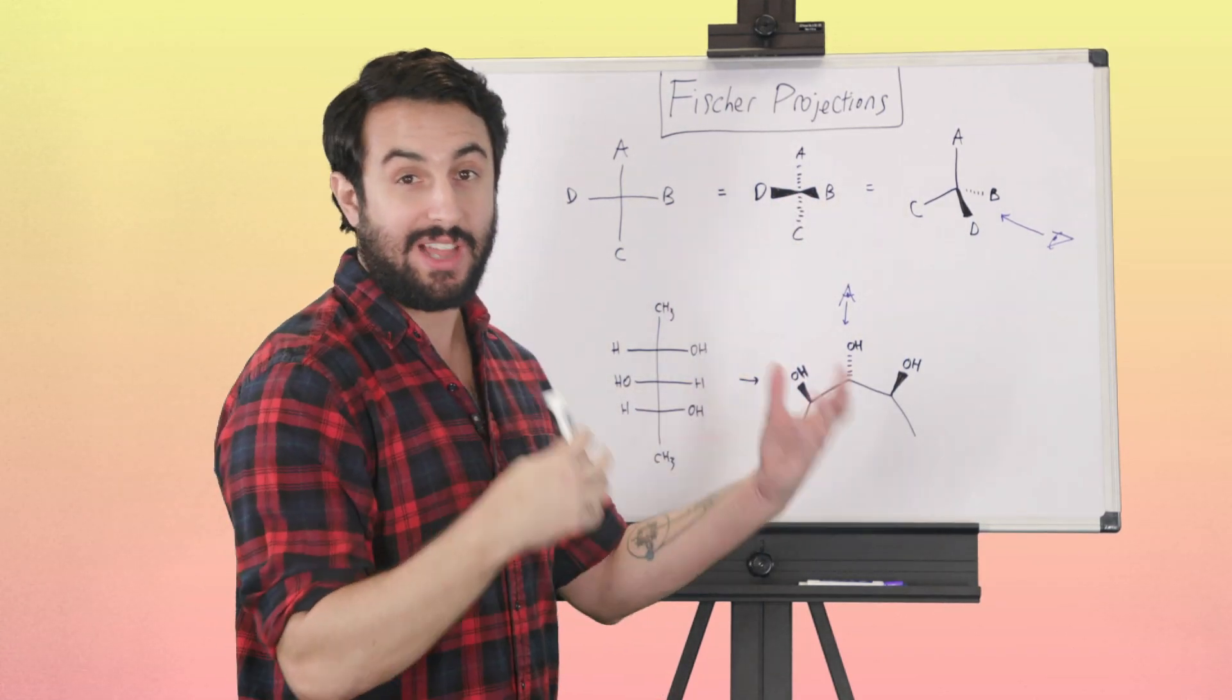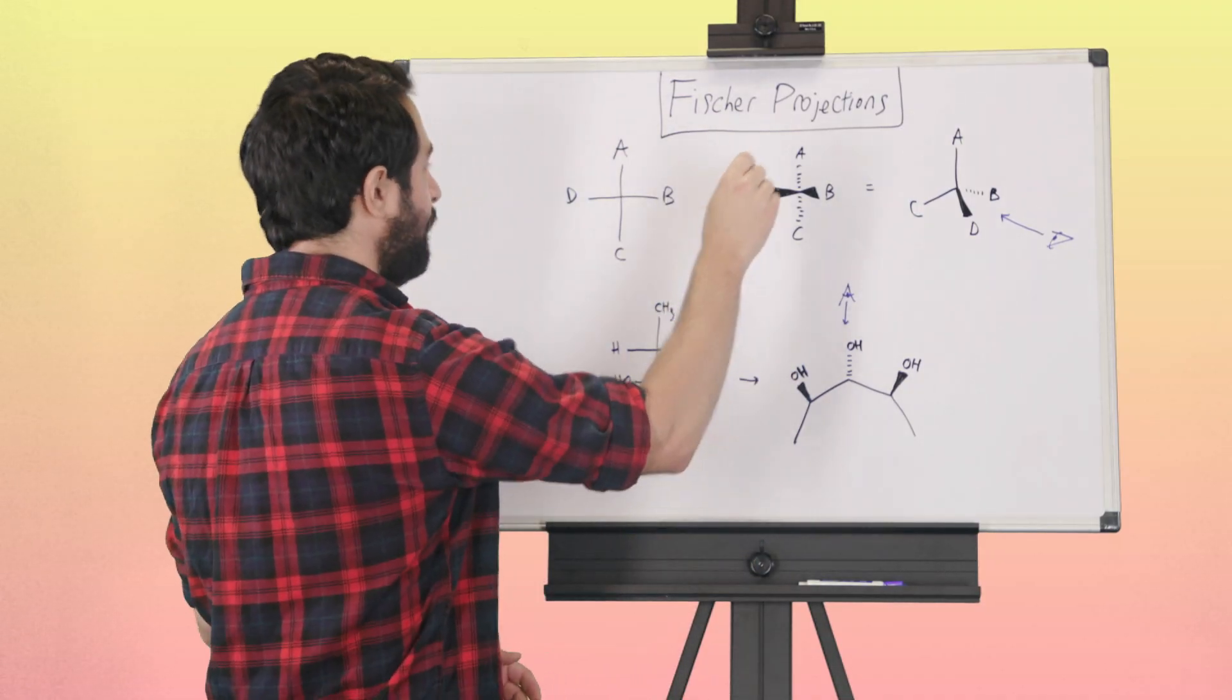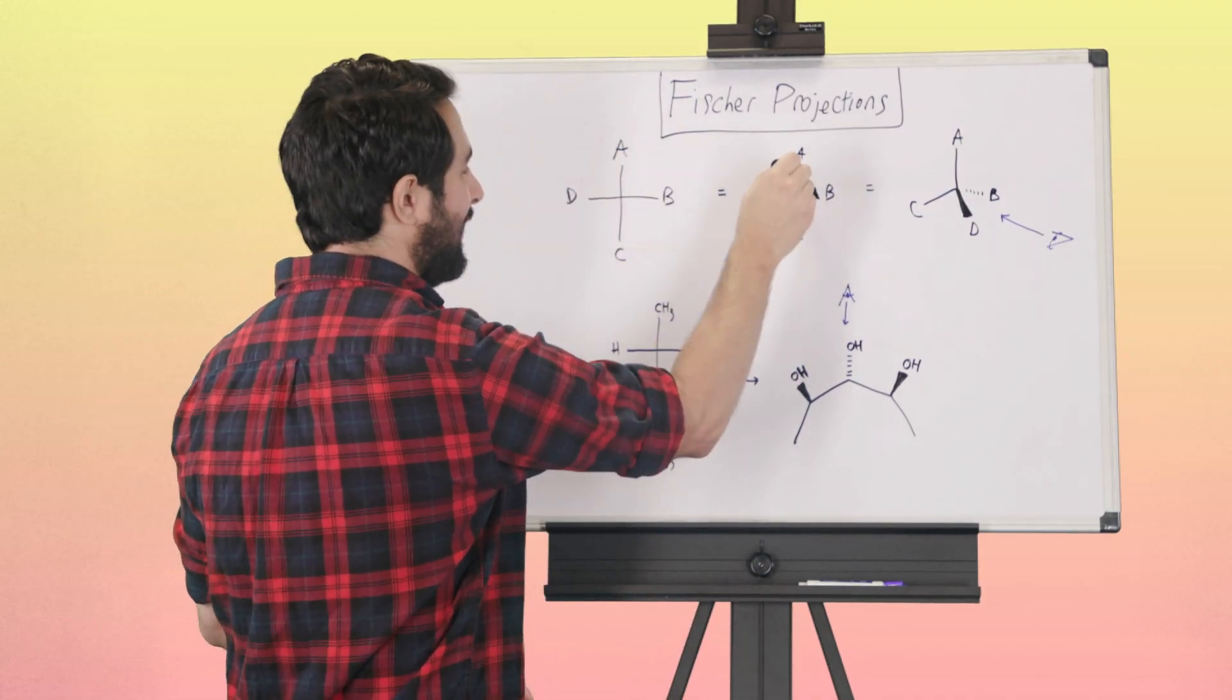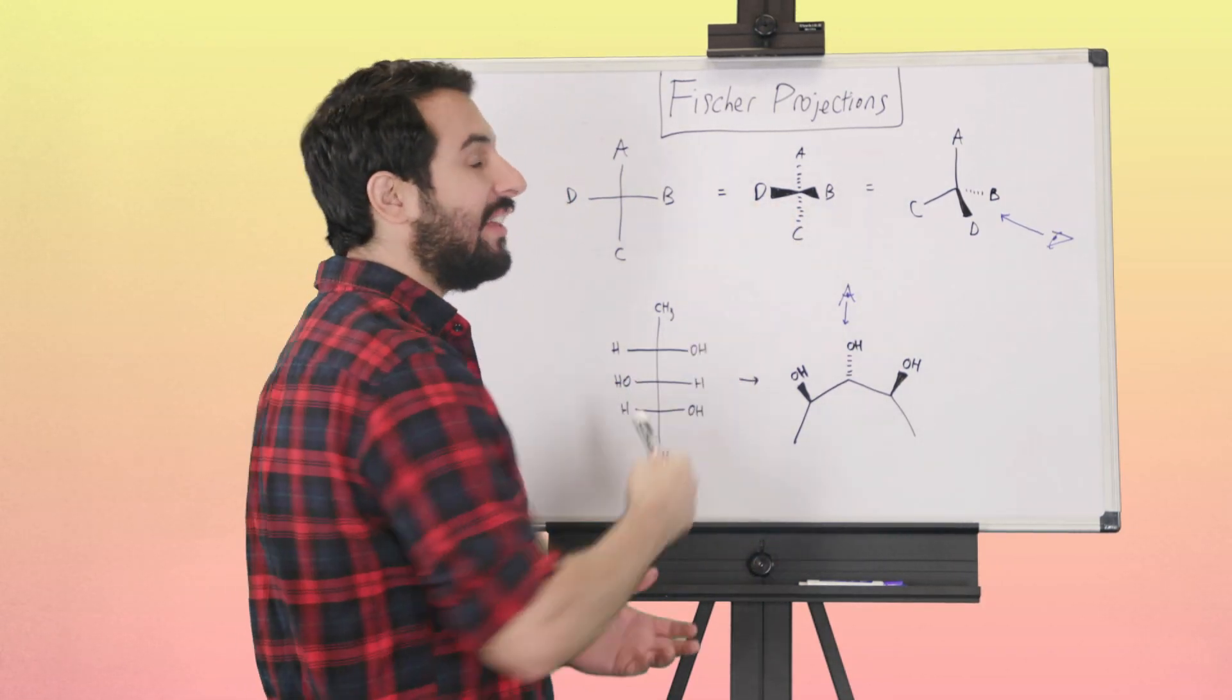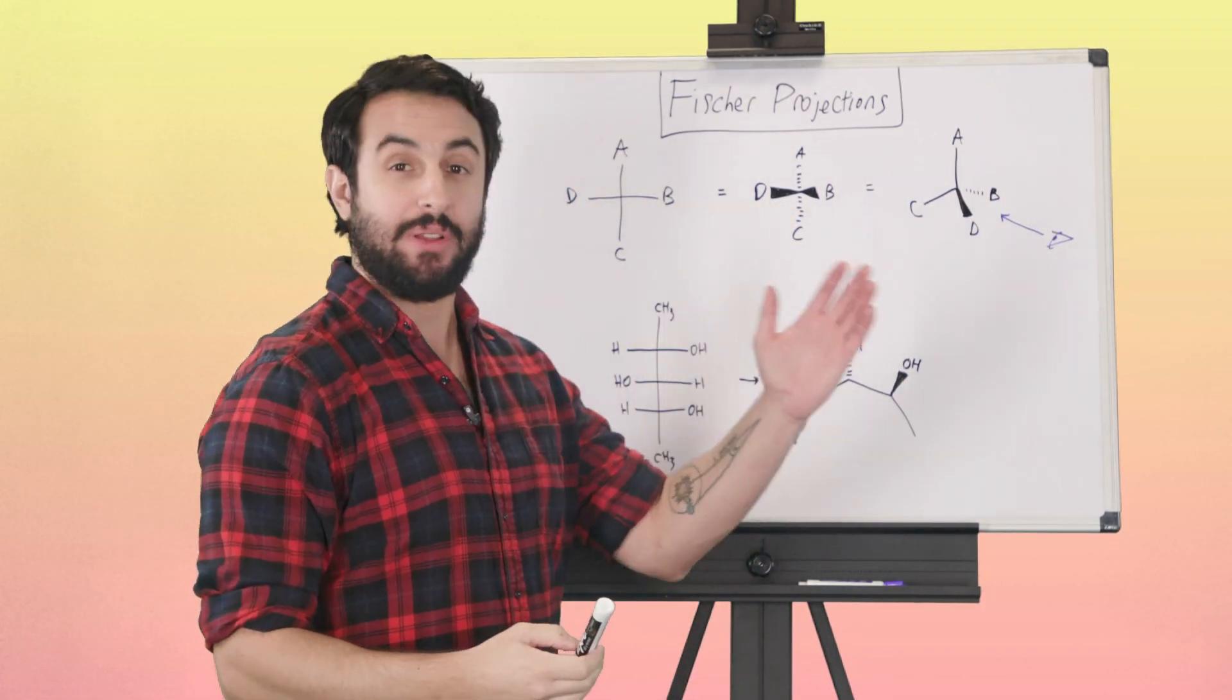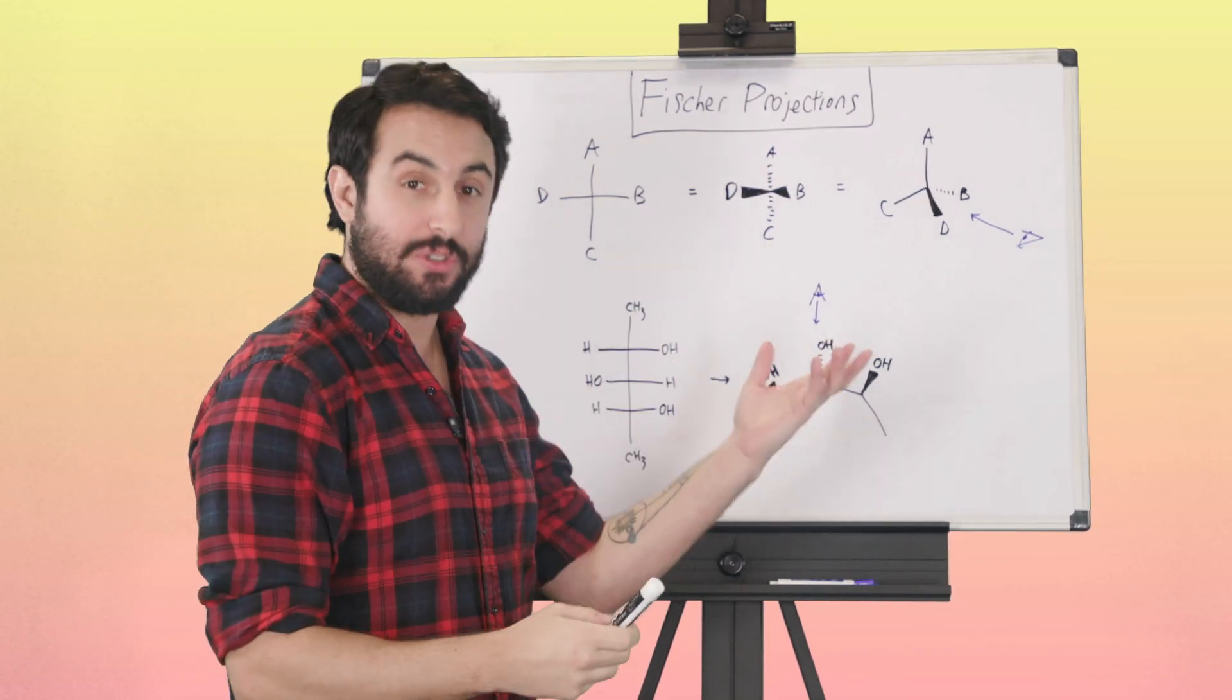This also looks a little strange. We're used to including at least one of the bonds in the plane of the board, so having all four of these bonds either projecting outwards or inwards is strange.